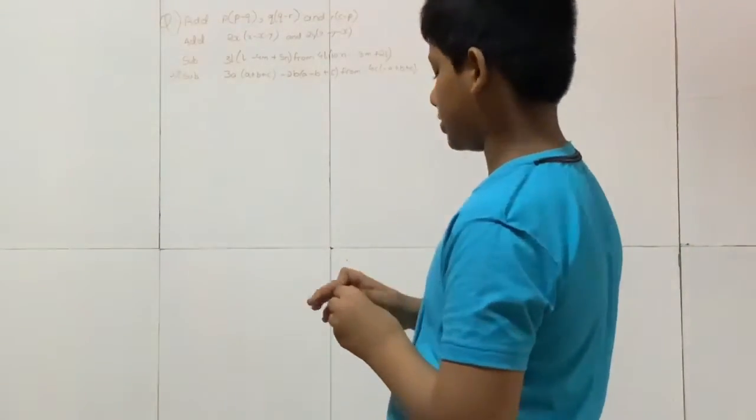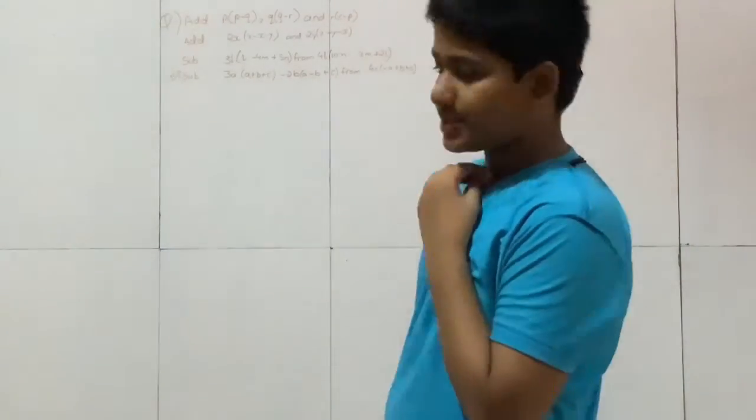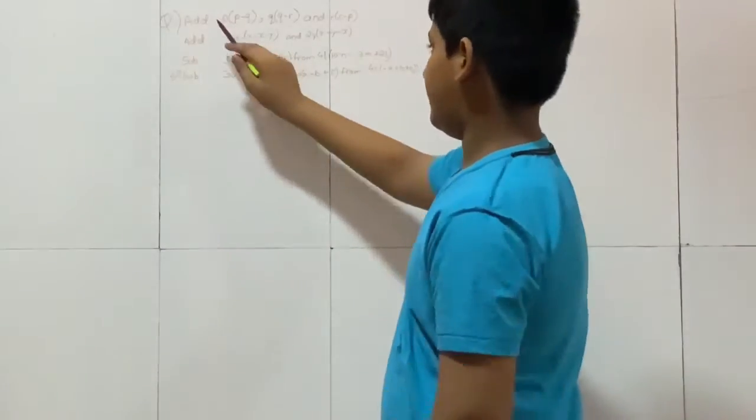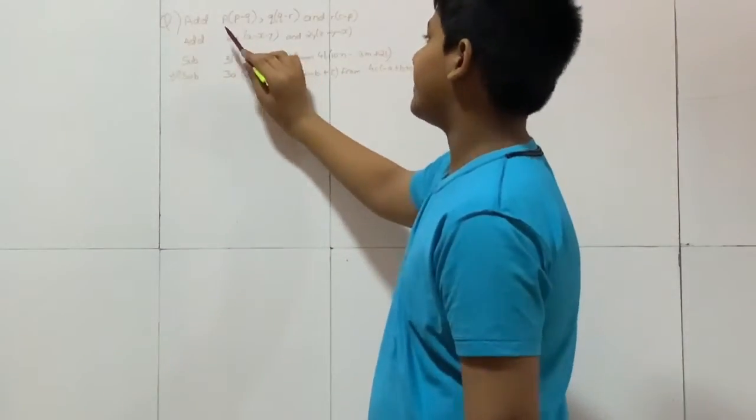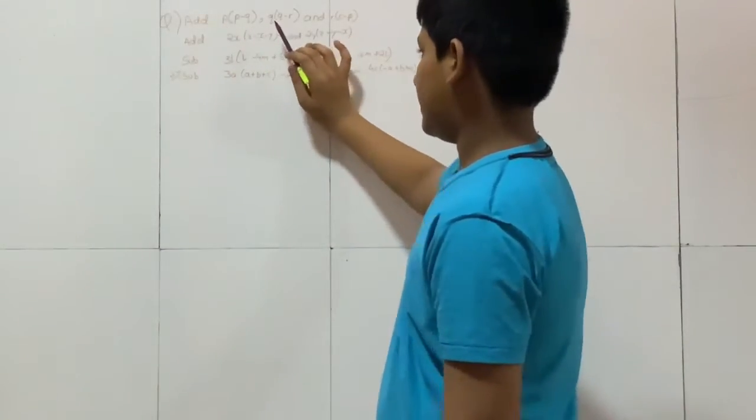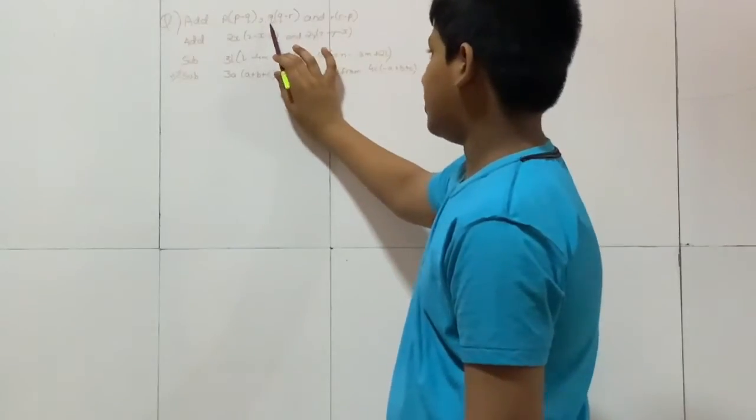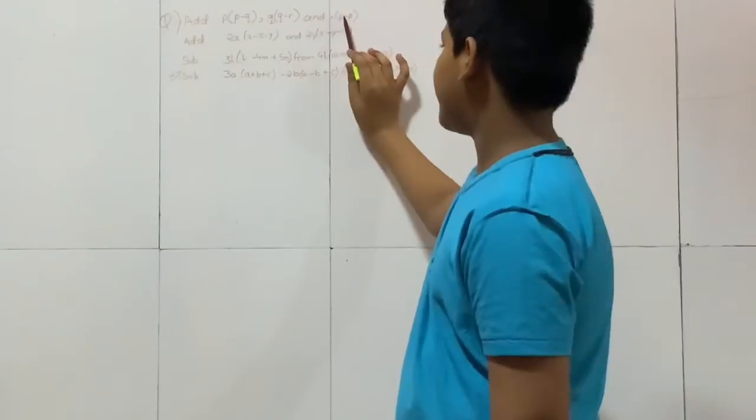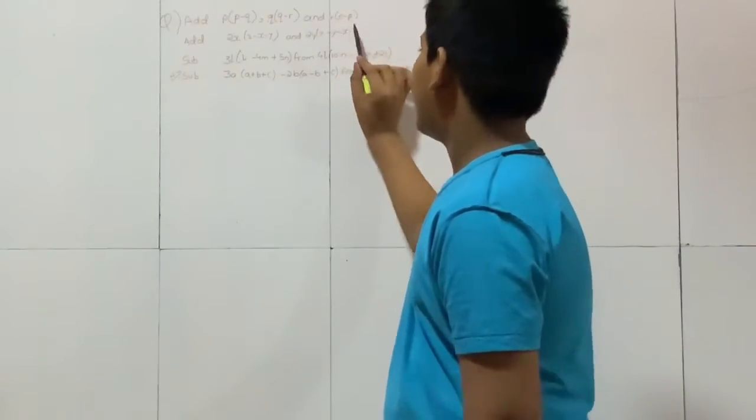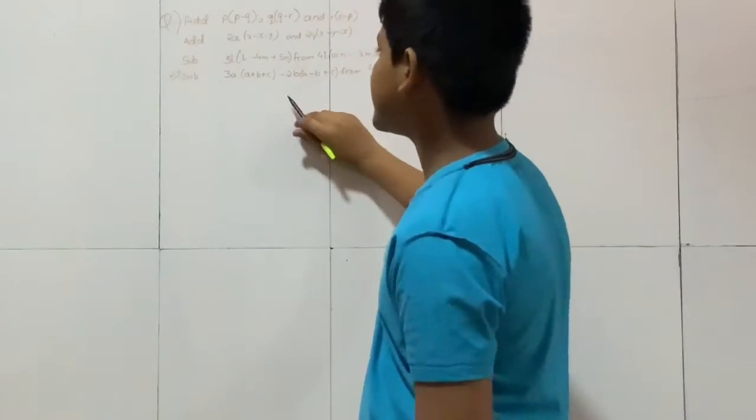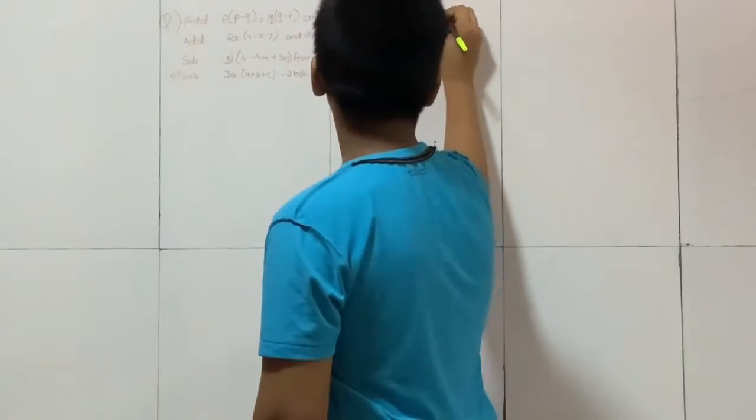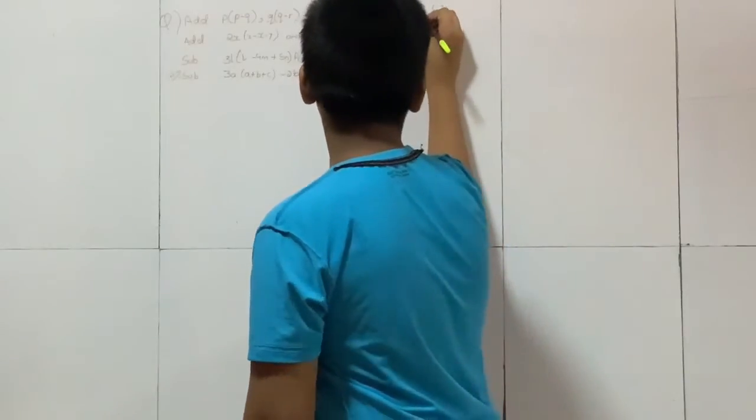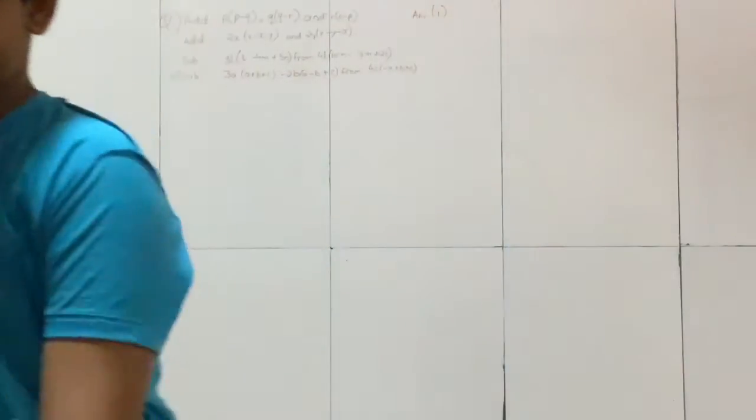Our first statement is P multiplied by P minus Q, plus Q multiplied by Q minus R, and R multiplied by R minus P. This is our first question. Now let us write the answer.